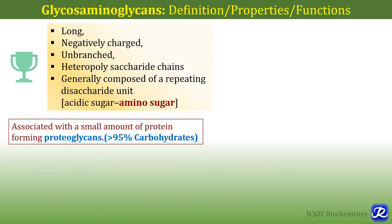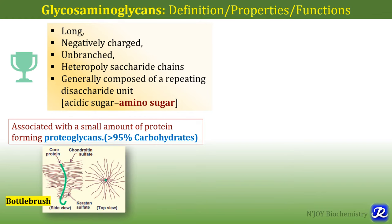Glycosaminoglycans are associated with a small amount of protein and they form proteoglycans. Proteoglycans contain more than 95% carbohydrates and less than 5% protein, unlike glycoproteins which have more than 95% protein and less than 5% carbohydrates. Glycosaminoglycans form a proteoglycan monomer — they are bound to a core protein covalently. The core protein is shown in green, and glycosaminoglycans like chondroitin sulfate and keratan sulfate are linked to this core protein by covalent bond, appearing like a bottle brush — this is a proteoglycan monomer.